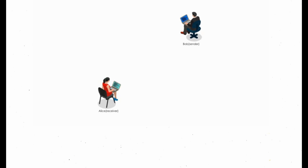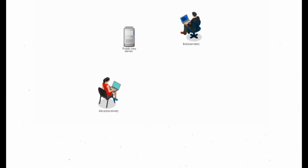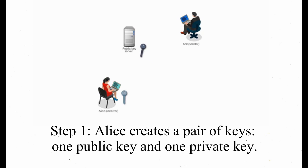Here is the answer and all the steps they take in the whole process. Step 1: Alice creates a pair of keys — one public key and one private key. Alice puts the public key in a public key server, which anyone can access.